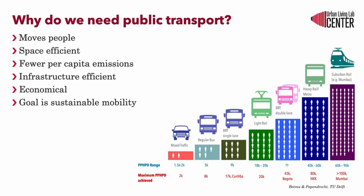Public transport is one of the key pillars for implementing sustainable mobility. It is a mode that moves large numbers of people compared to personal motorized transport, where one vehicle can move a maximum of five people if it's a car and two people if it's a motorcycle. Public transport, for example a bus, can move up to 60 people.